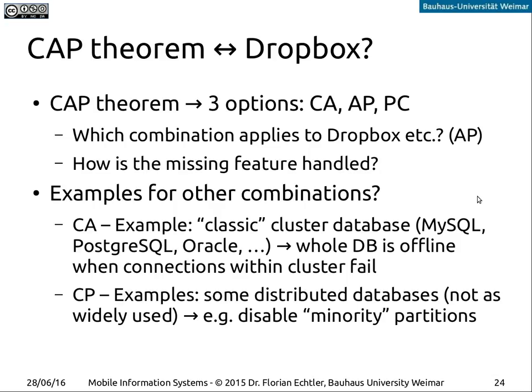To complete this, let's look at what the other combinations look like. Consistency and availability is something like a traditional database, especially a cluster database distributed across many servers — when connections in that cluster fail, the whole database goes offline, so it's not tolerant to network partitions. The third combination, consistency and partition tolerance, is not as widely used. There are some distributed databases which try to follow this principle, but the approach would be to disable or ignore partitions which are in the minority.